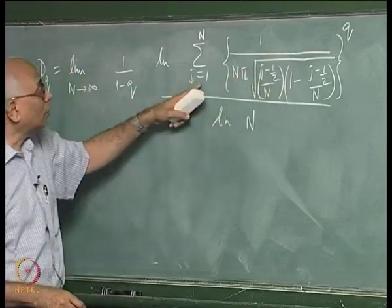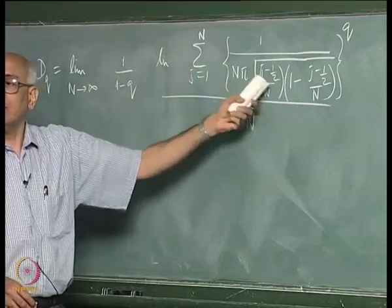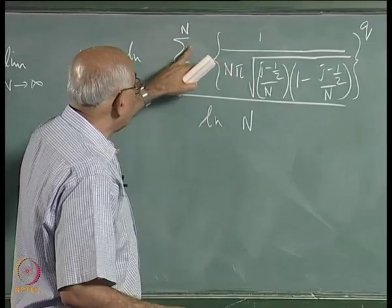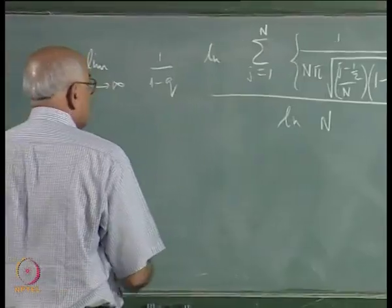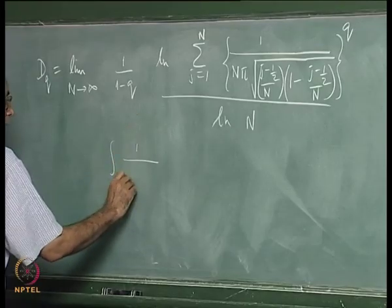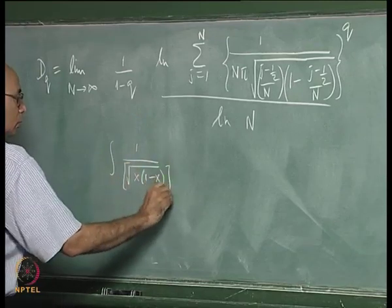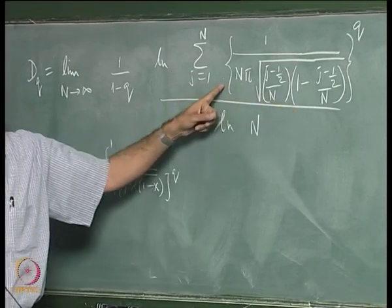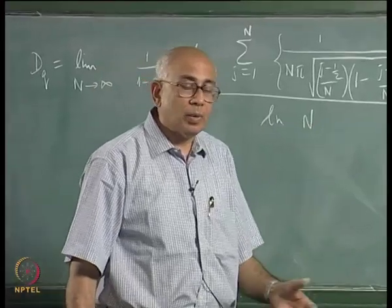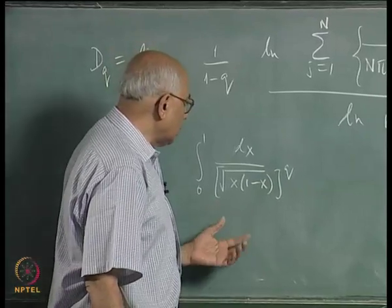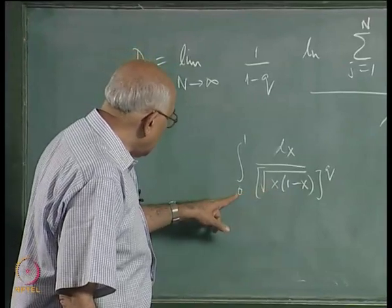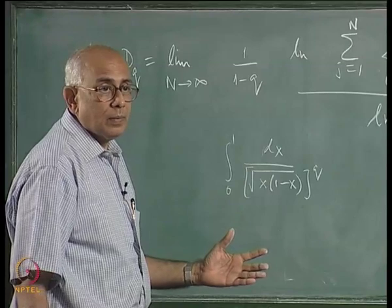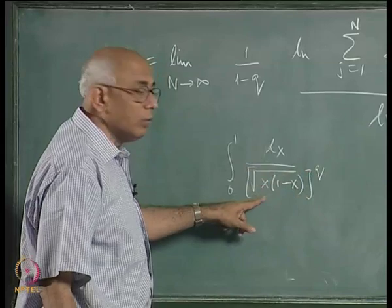The sum from 1 to n strongly suggests converting back to an integral. Factoring out n^{-q} from μ_j^q, the remaining sum — when divided by 1/n — becomes a Riemann sum that converges to the integral ∫_0^1 (1/(π√(x(1−x))))^q dx. This integral converges provided q/2 < 1, since the integrand has singularities at x=0 and x=1.